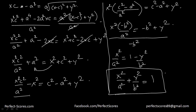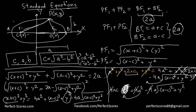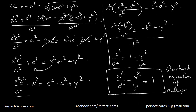So x²/A² + y²/B² = 1 is the first standard equation of an ellipse. Every point on the ellipse is going to satisfy this equation. It took a little bit of manipulation but we were able to come up with the relationship between x, y, A and B — where A is the semi-major axis, B is the semi-minor axis, and x, y are the coordinates of points on the ellipse.